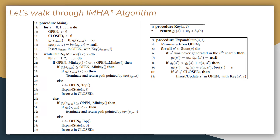Round-robin fashion is basically an arrangement of choosing all elements in a group equally in some rational order — usually from top to bottom of the list and then starting again from the top. So this is basically the IMHA star algorithm.